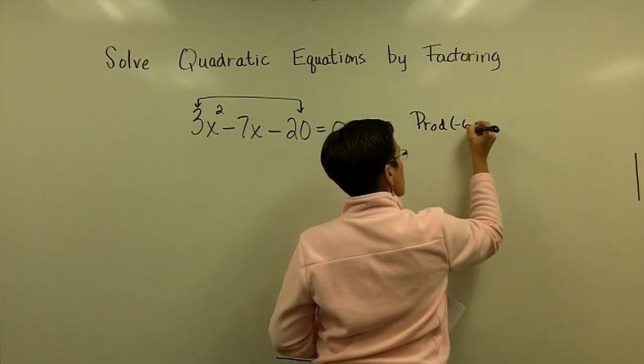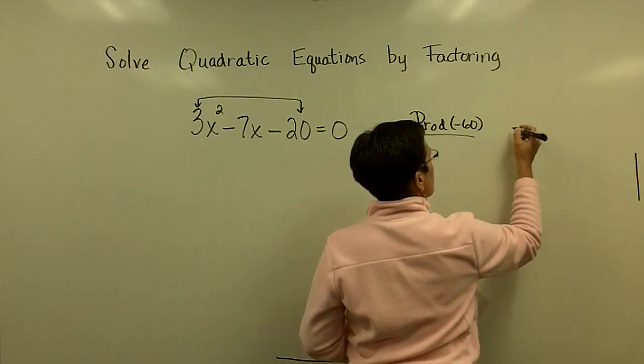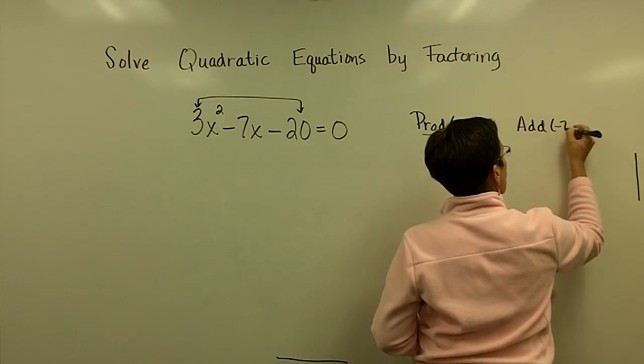So I'm looking for two numbers whose product is three times negative 20 or negative 60, and I want those two numbers to add to be the middle coefficient, in this case negative 7.